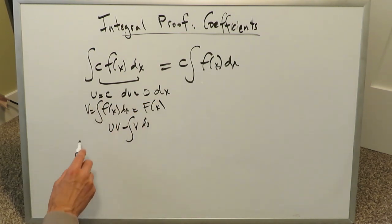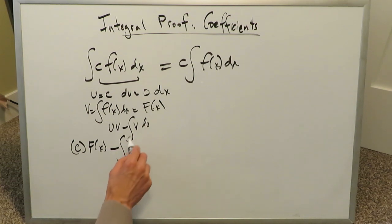We have everything we need. u is equal to c, v is equal to this F of x, which is your anti-derivative, minus v, again, is this anti-derivative, times du, which is zero dx.